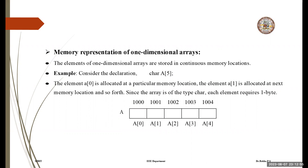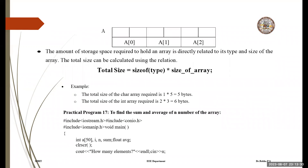The memory representation of a one-dimensional array: elements are stored in continuous memory locations. Consider the declaration 'char ER[5]'. Element ER[0] is allocated at a particular memory location, ER[1] at the next, and so on. Since the array is of type char, each element requires one byte. The total storage required is calculated as: size-of-type multiplied by size-of-array. For a char array of 5: 1 × 5 = 5 bytes.